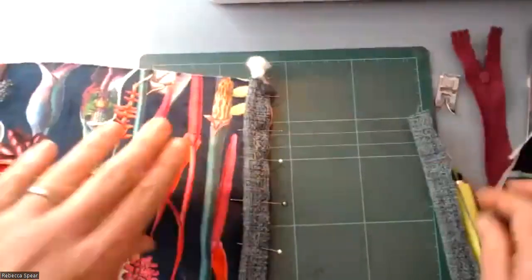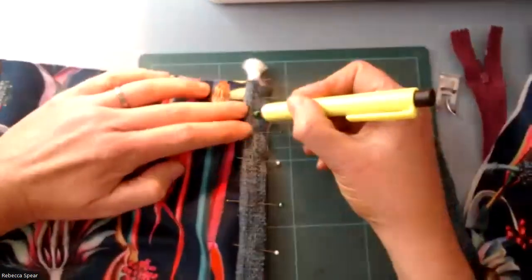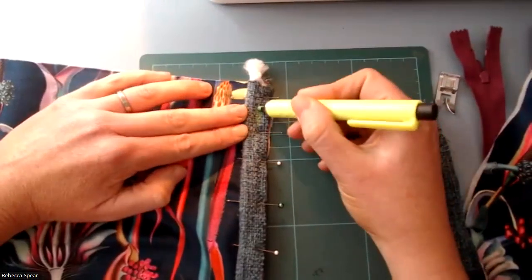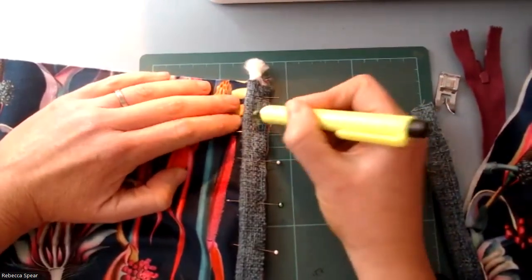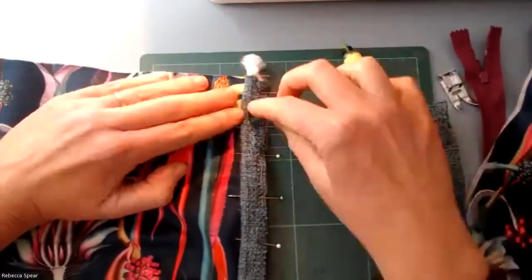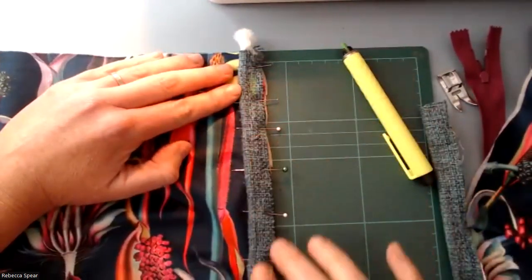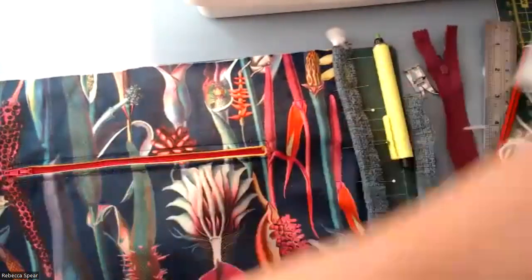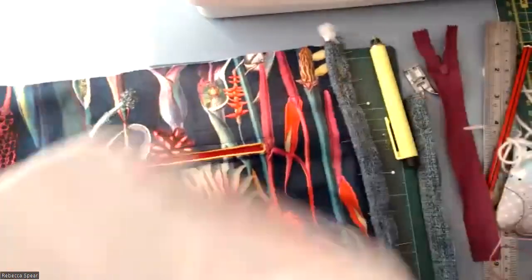And then what I'm going to do with my zipper foot is get in a little bit closer, so sort of about half a centimeter from the edge. So this doesn't have to be writing close to the cord yet; that will be the last stage. So we're just making sure that it's attached to one of your main panel pieces.